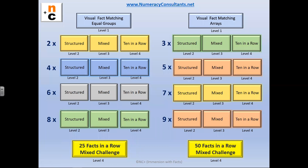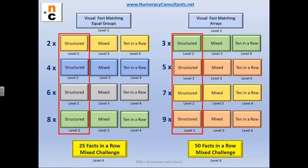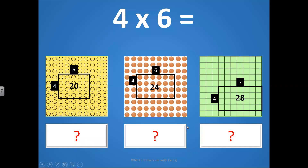Level two is where most of your students will begin. Level two is also referred to as structured practice because it shows the same problem in a sequence of four different representations. The first one of each sequence provides a child the opportunity to learn the fact — they are not expected to know it. The answer is clearly there, and they are able to scan with their eyes both the multiplicand and multiplier and the product at the same time.